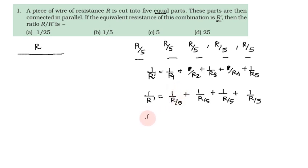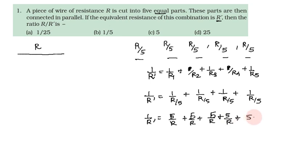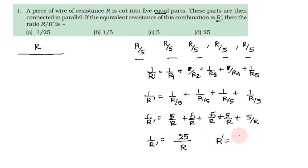So 1 by R' equals 5 by R plus 5 by R plus 5 by R plus 5 by R plus 5 by R. Adding these: 5 plus 5 is 10, plus 5 is 15, plus 5 is 20, plus 5 is 25, giving 25 by R. Taking the reciprocal, R' equals R by 25.